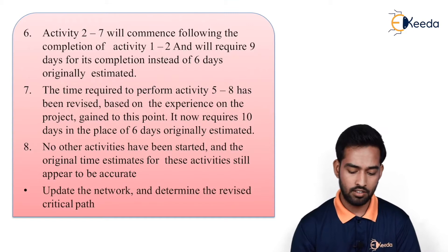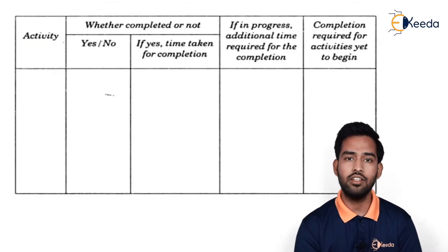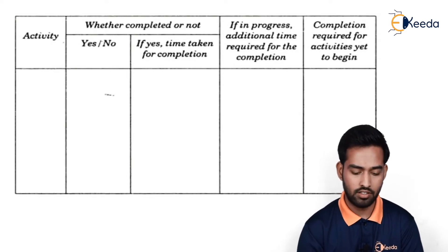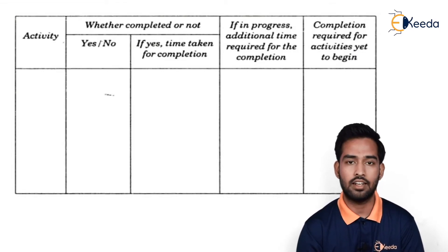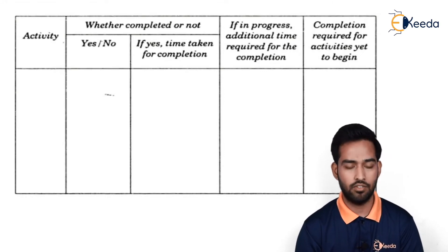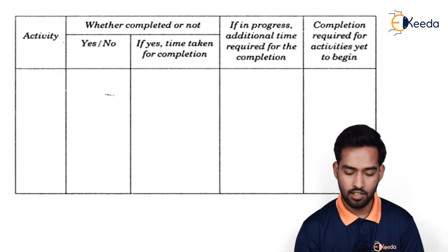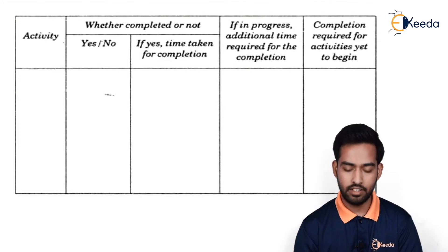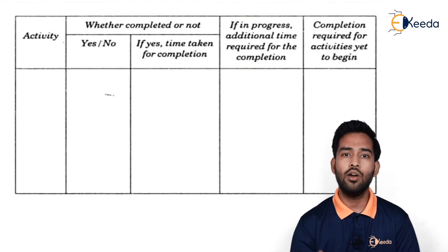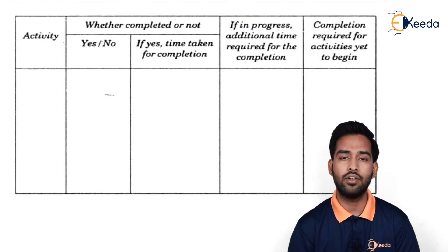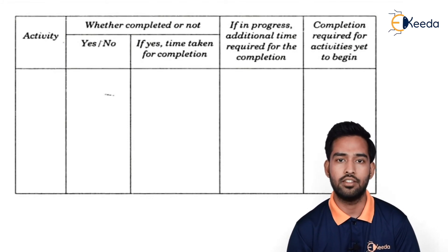Update the network and determine the revised critical path. After this, we have to update the network and fill all this information in the chart, in which we can see each activity, whether it is completed or not. For example, activities 1-4 and 1-3 are completed, so we write 'yes.' If activities are not complete, then they are in progress — and if they are in progress, how much more time they will require must be mentioned, as well as the time required for activities yet to begin. In this video, we have seen how to update a network, the process of updating, when to update it, and what information and data we require to update a network.